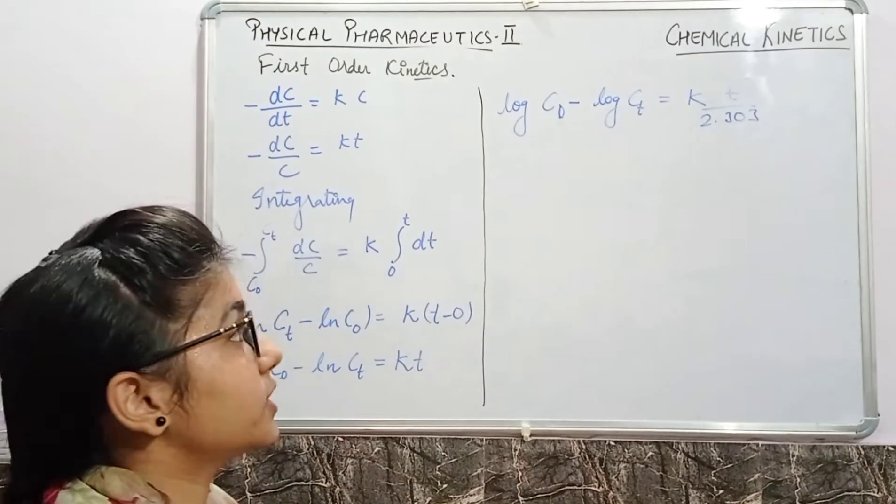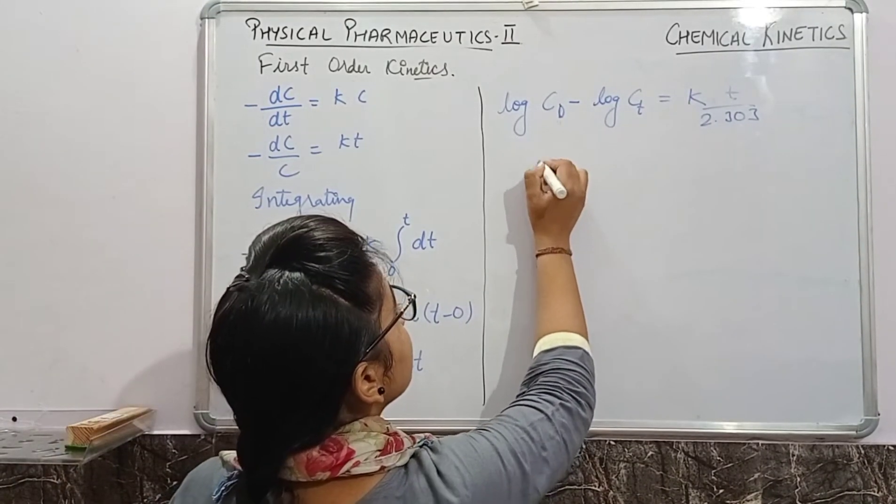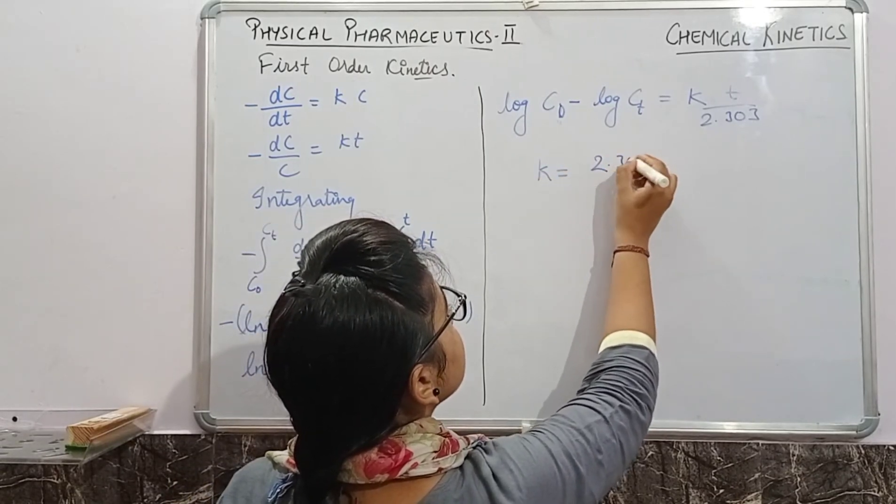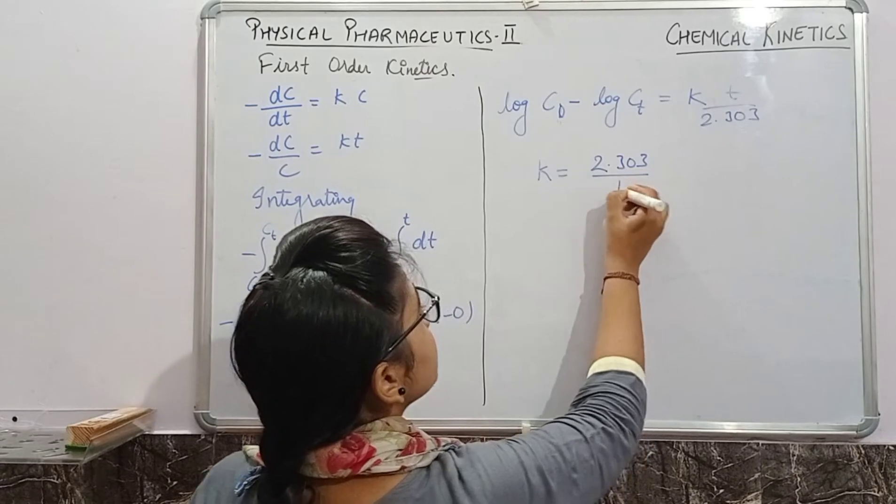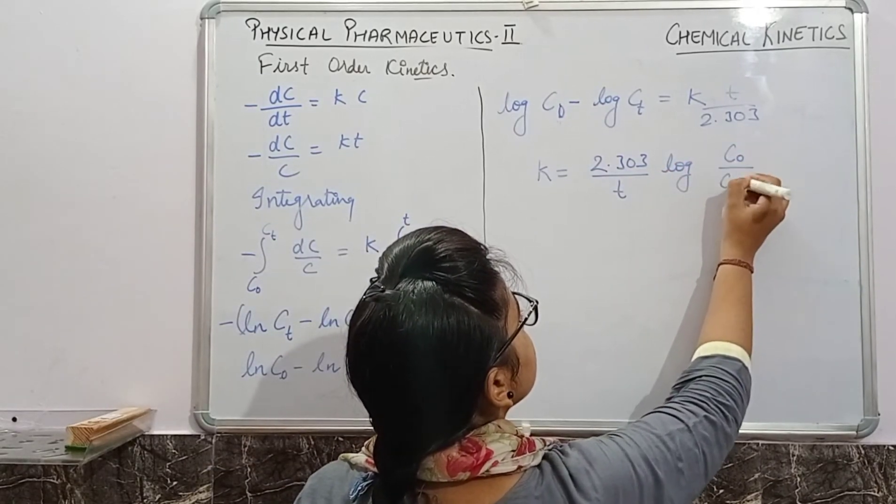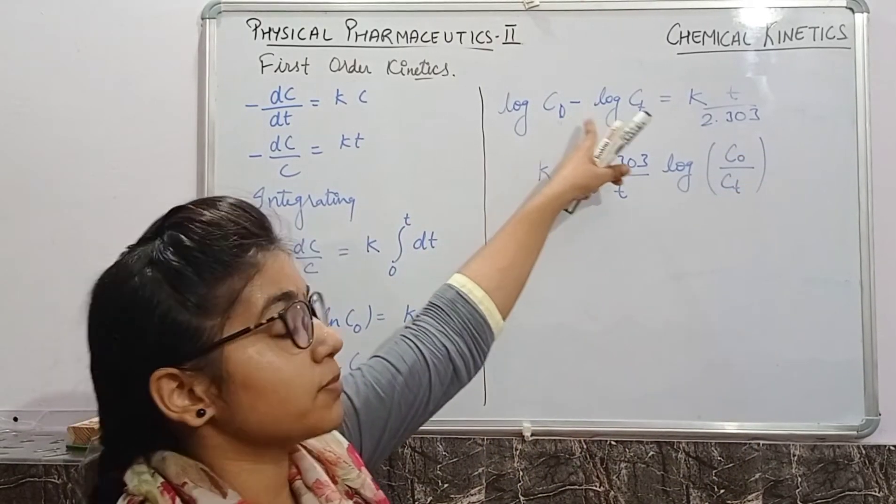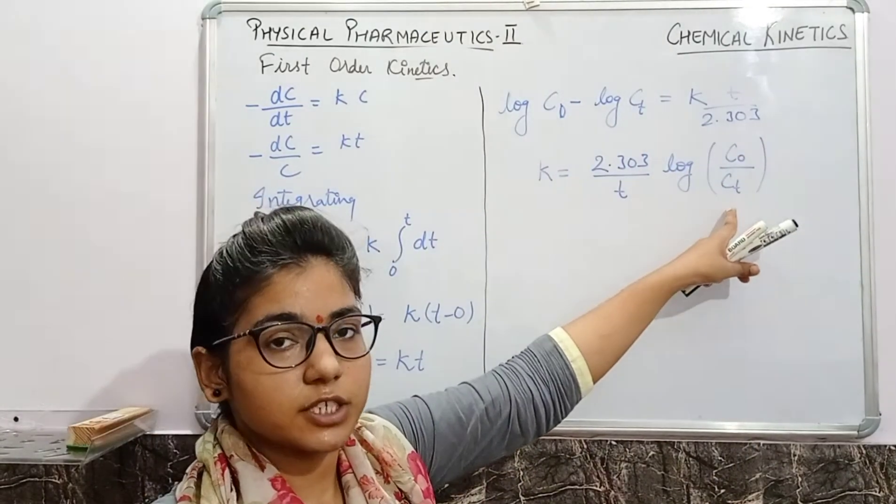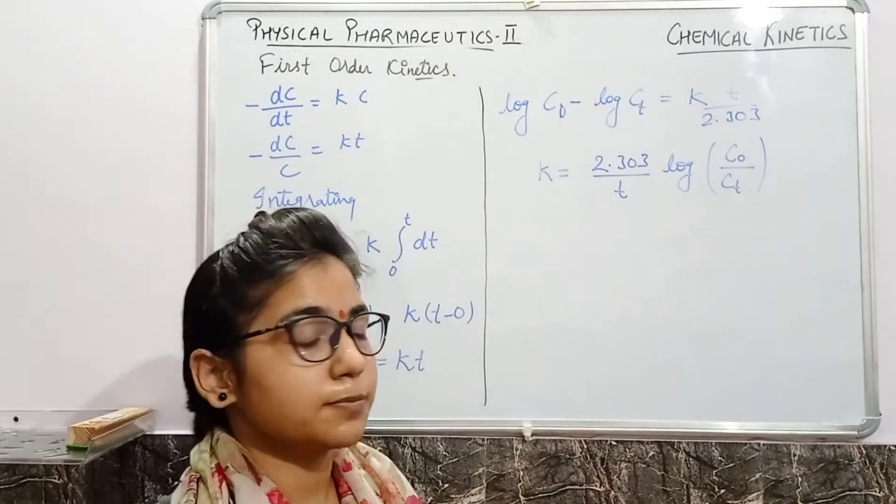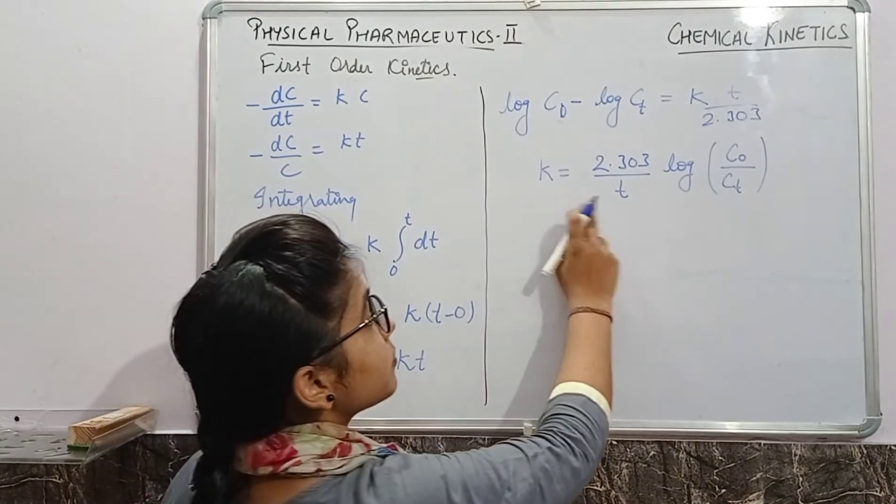From this equation, we will derive the rate constant value. So the rate constant value will be k equals 2.303 upon t log(c0/ct). This happens because when log values are minus, they will go to the division mode, and when log values are in addition, they will go for the multiplication mode.